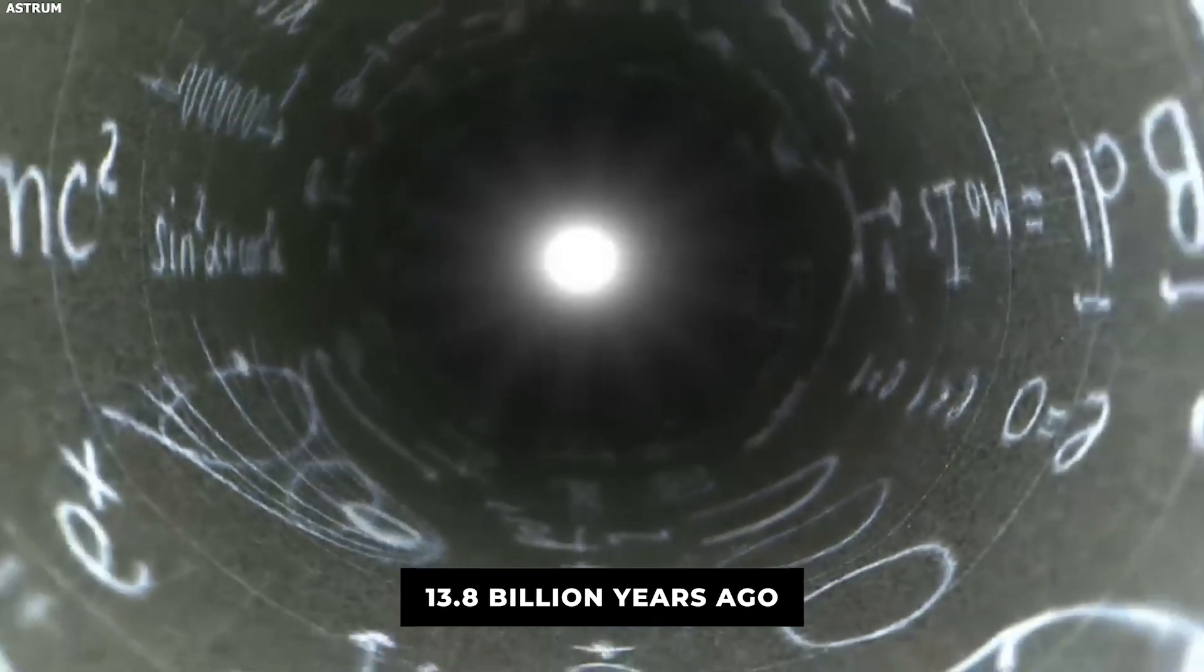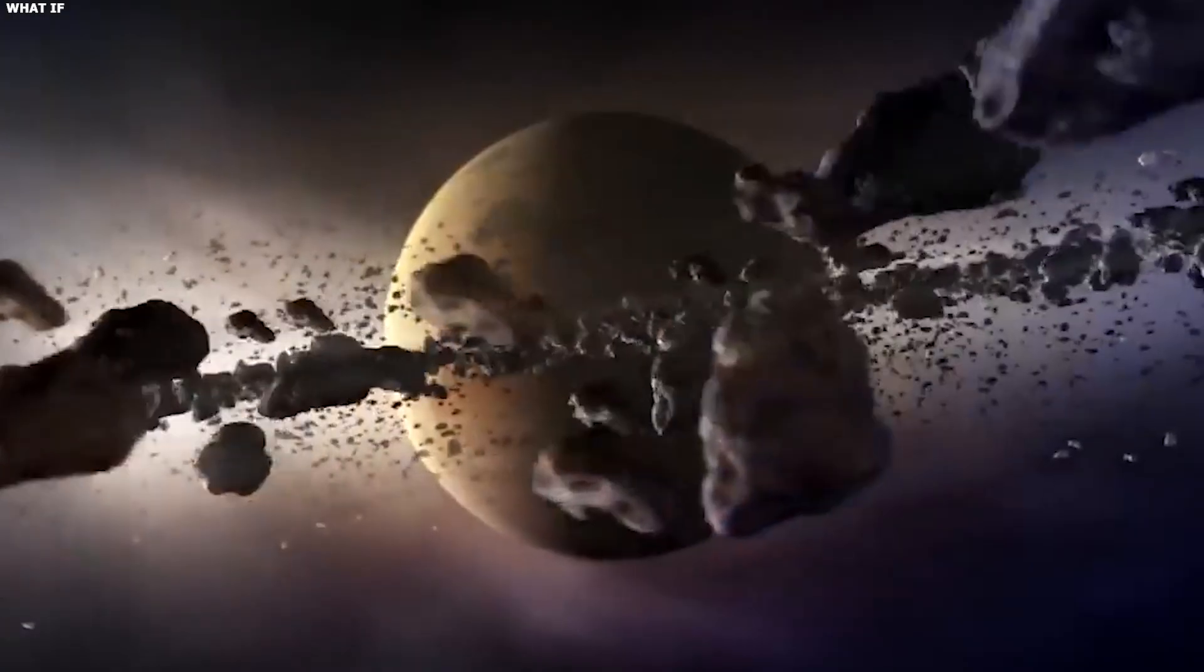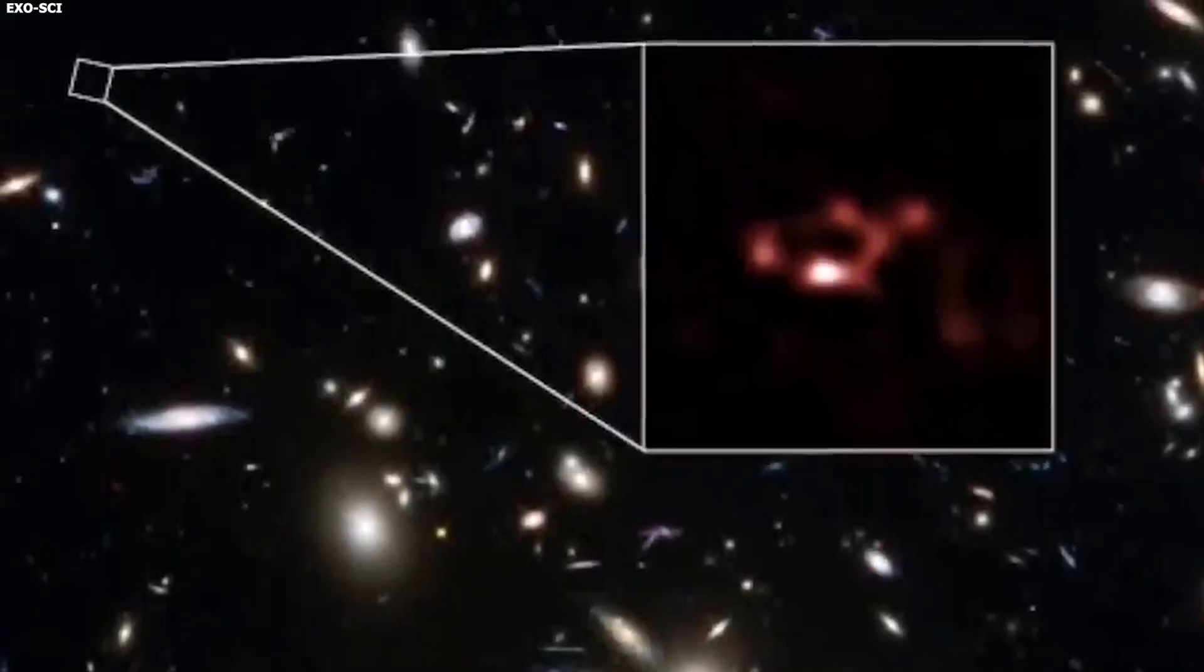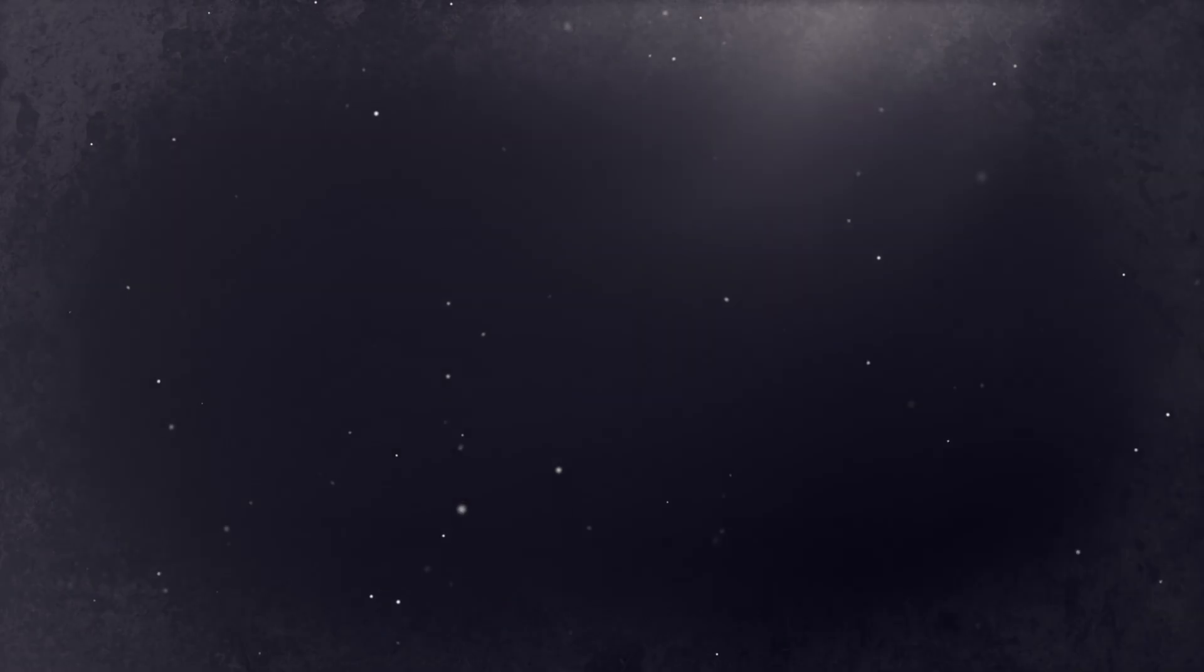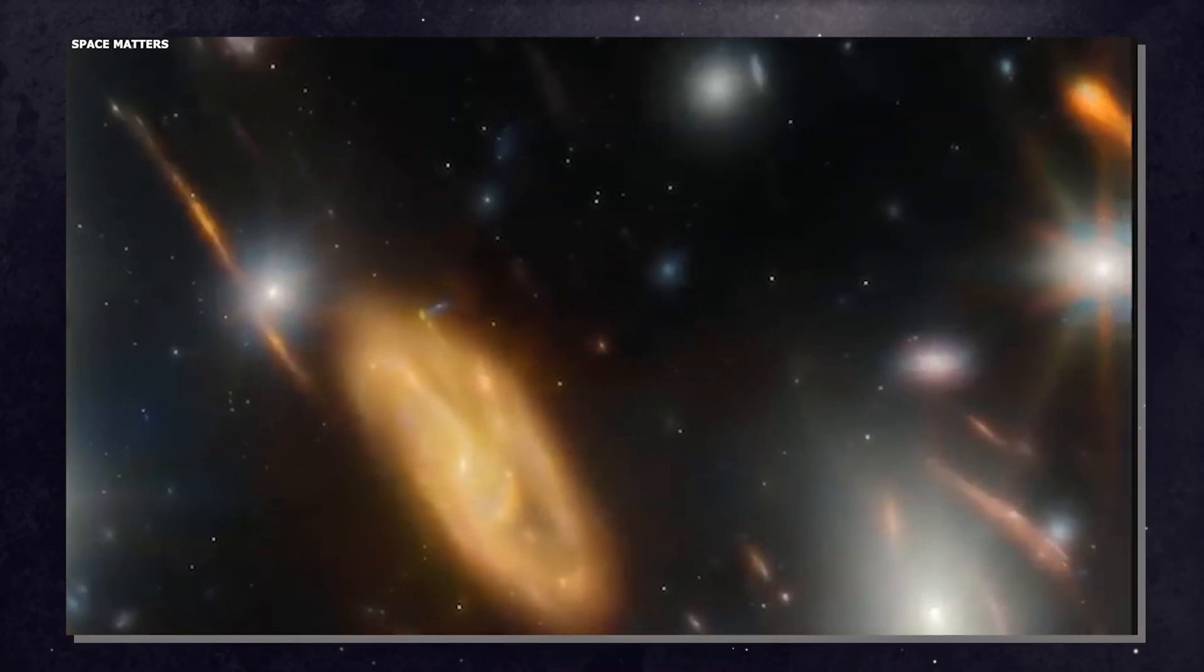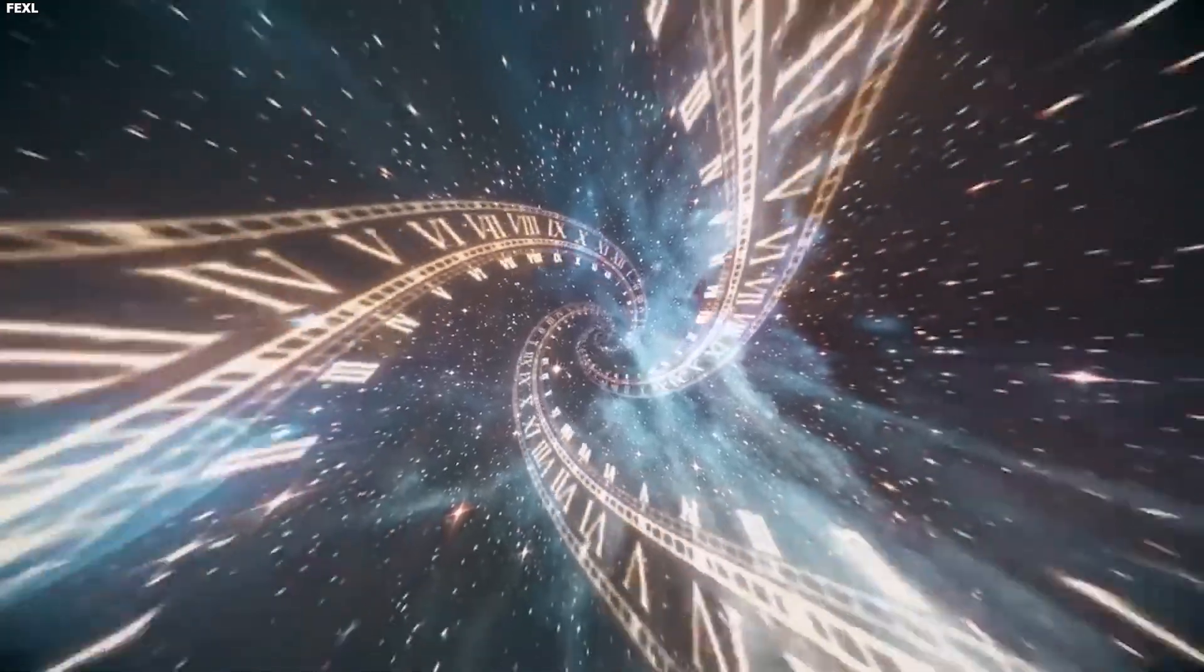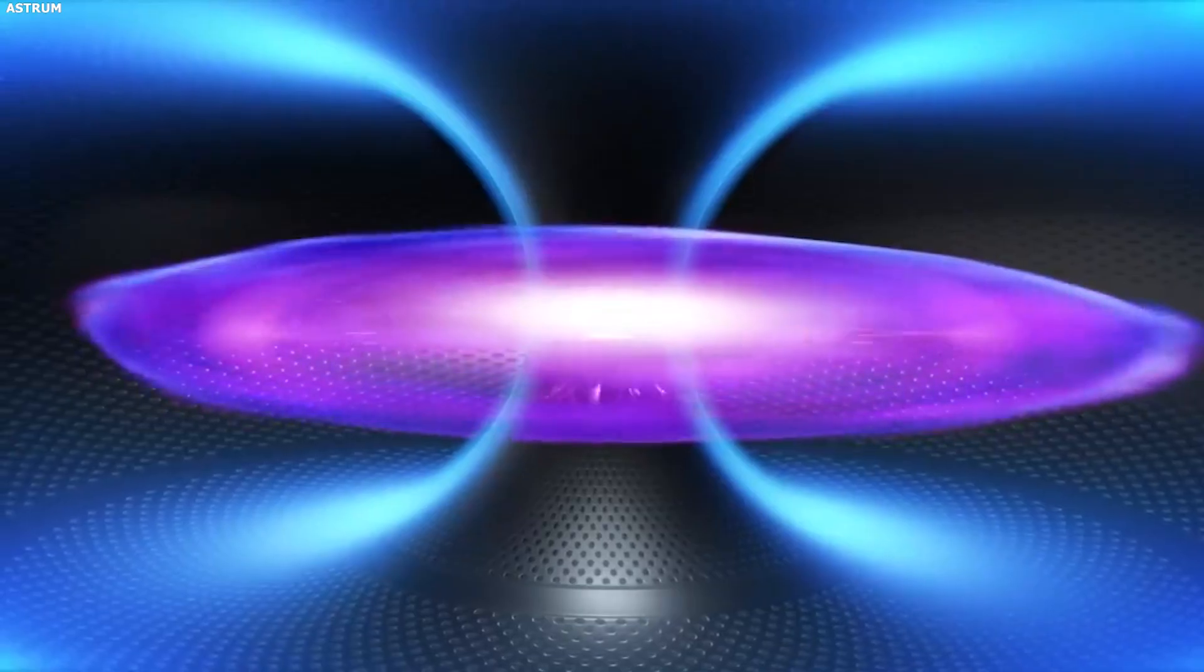About 13.8 billion years ago, the universe began with the Big Bang. Everything started as a hot, dense soup of energy and particles. As space expanded and cooled, matter started to clump together under gravity. First came tiny fluctuations in density. Those grew into larger clumps. Those clumps attracted more matter and became even bigger.